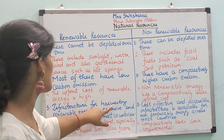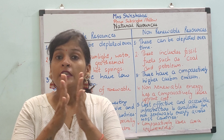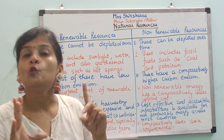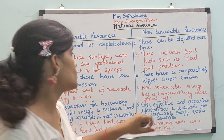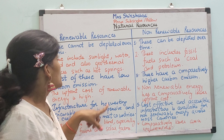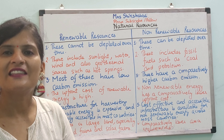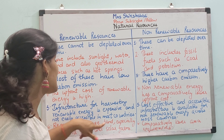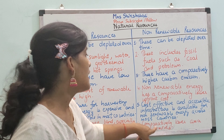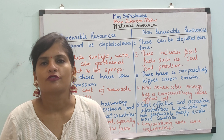The infrastructure for harvesting renewable energy is expensive and not easily accessible in most countries, whereas infrastructure for non-renewable energy is cost-effective and accessible across all countries. Additionally, producing renewable energy — especially for wind farms and solar farms — requires a large land area, whereas non-renewable energy does not require as much area.